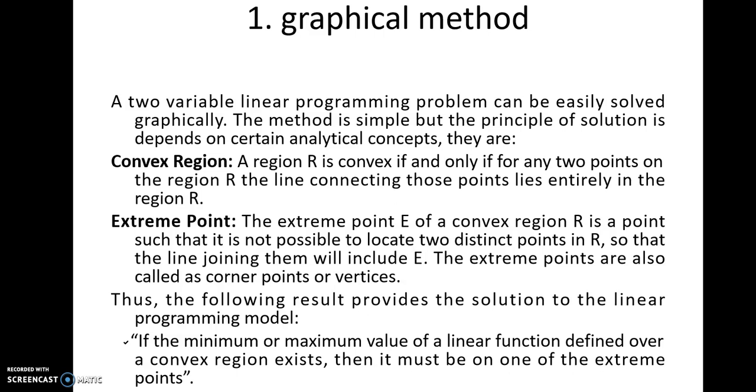First, convex region. A region R is convex if and only if for any two points on the region R, the line connecting those points lies entirely in the region R. The line connecting the points should lie entirely in the region R, then it is said to be convex.